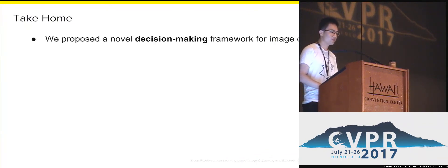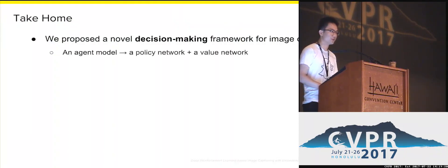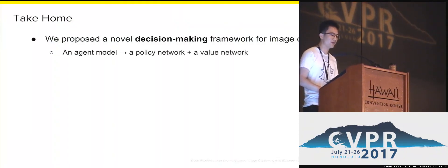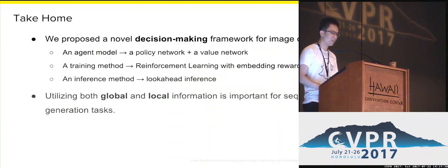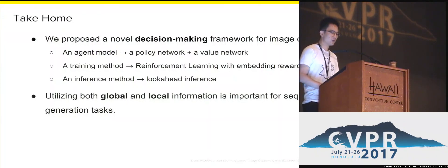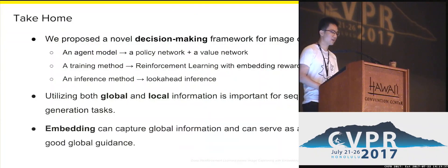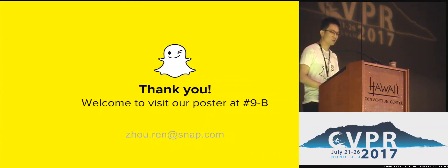Let me conclude with some take-home messages. First, we propose a novel decision-making framework for image captioning, containing an agent model that combines both local and global information. We also propose the embedding-driven reinforcement learning method for training and the look-ahead inference for testing. Second, utilizing both global and local information is important for sequential generation tasks. And lastly, embedding can capture global information and can serve as a very good global guidance. Thank you very much for your attention, and welcome to visit our poster at number 9B.